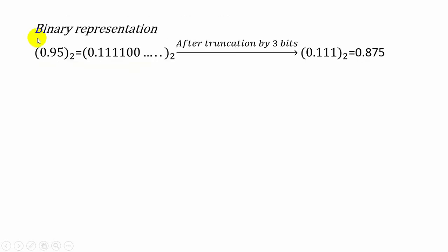Here we see the effects of coefficient quantization. One coefficient is 0.95. When you are converting into binary it can be represented as 0.1111 and so on. Here it is asked to consider only three bits, so when you are truncating to three bits we will get 0.110. The decimal equivalent of this can be written as 0.875.